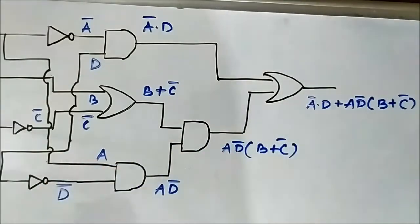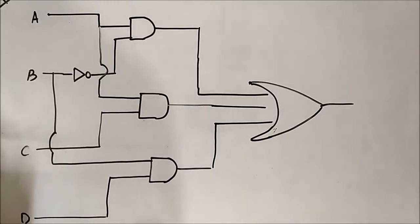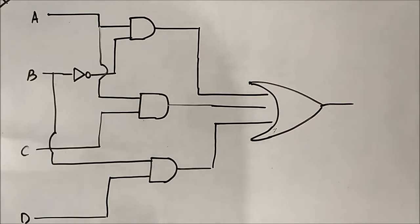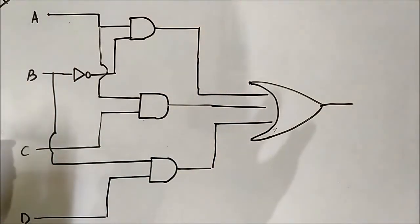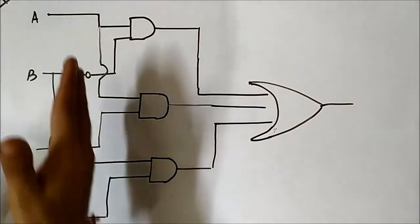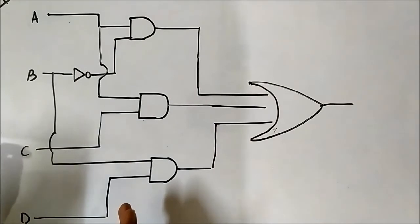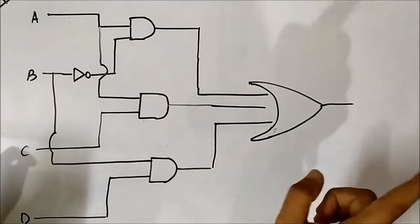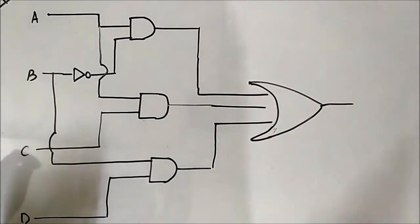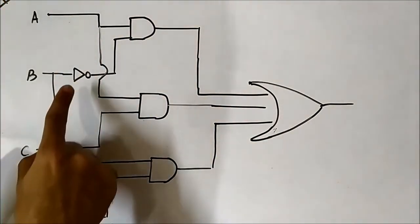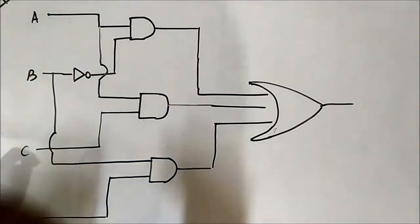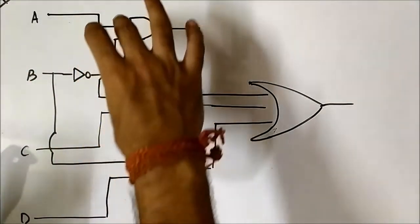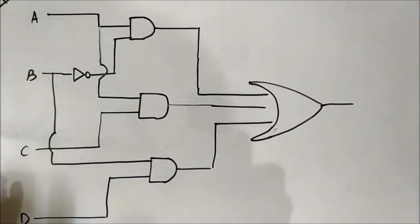This is the eighth question. We have a logic circuit which consists of a NOT gate or inverter, then three AND gates, and finally a three-input OR gate. We can easily segment it: first layer is the NOT gate, second layer is the three AND gates, and the final layer is the three-input OR gate.